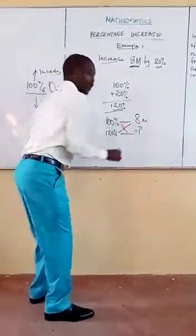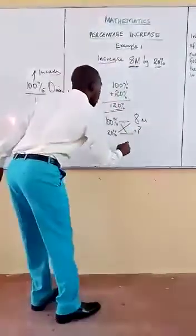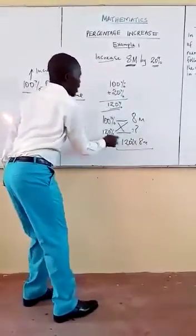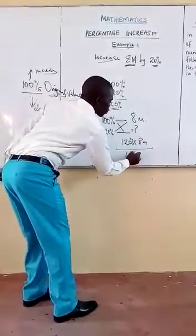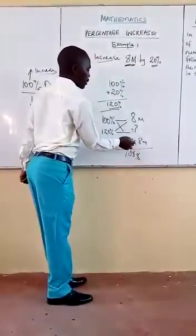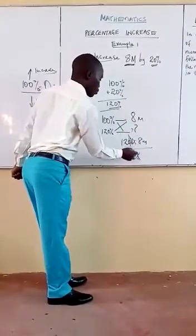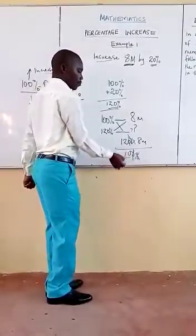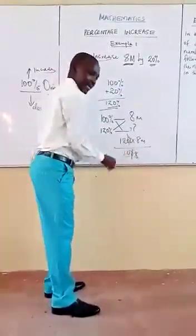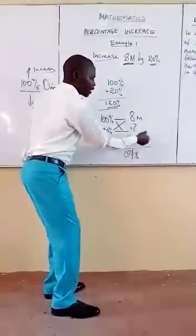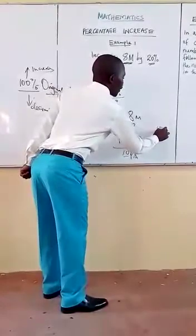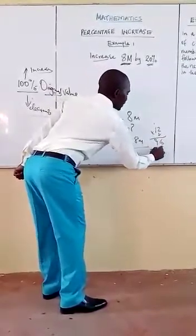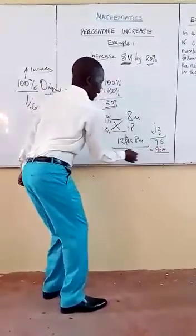You cross multiply. Note that you cross multiply. 120 multiplied by 8 meters, all over 100%. Percentage sign goes with percentage sign — zeros cancel out. Here we have 10. Remember, if this is 10, it is not important to cancel. Multiply the numerators: 12 multiplied by 8. You will get 96. So, 96 over 10.